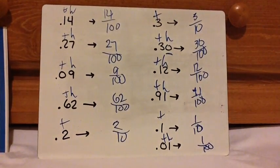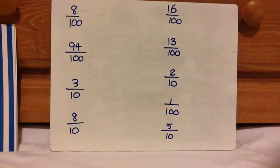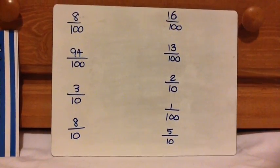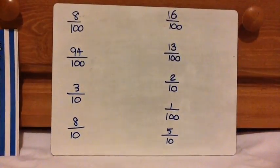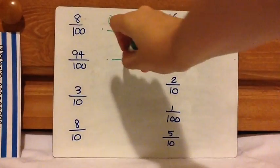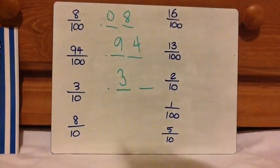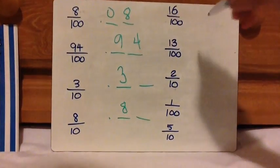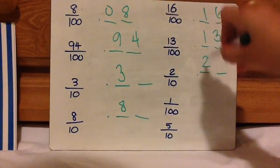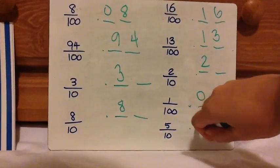Now I want you to write all these fractions as decimals. Press pause, work it on notebook paper, and press play when you're ready to check. Pay attention to the denominator — if it's hundredths, finish in the hundredths place; if it's tenths, finish in the tenths place. Eight hundredths, ninety-four hundredths, three tenths, eight tenths, sixteen hundredths, thirteen hundredths, two tenths, one hundredth — that's a tricky one — and five tenths.